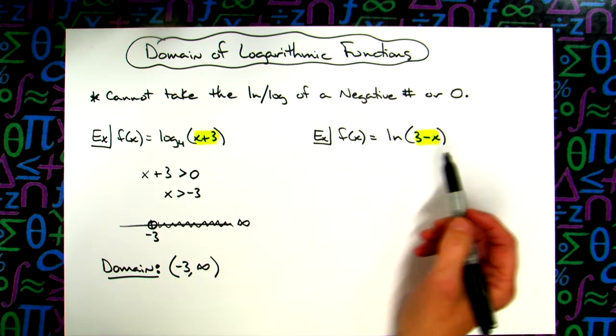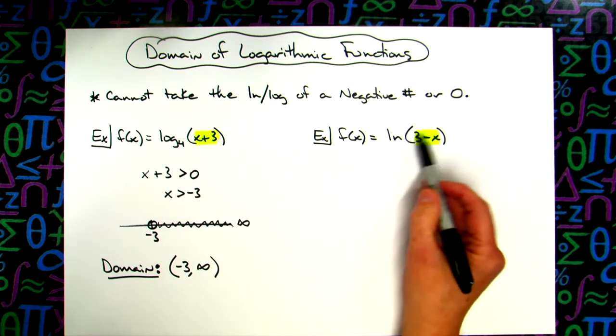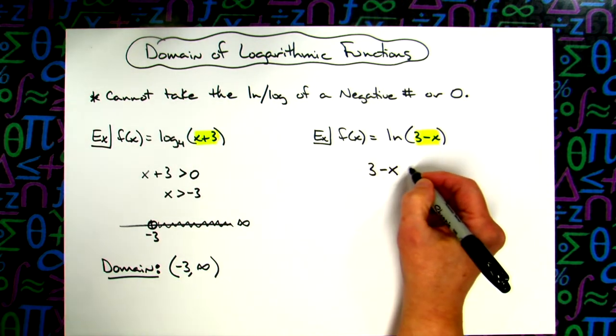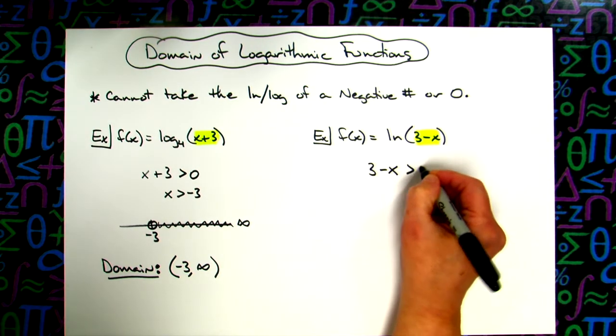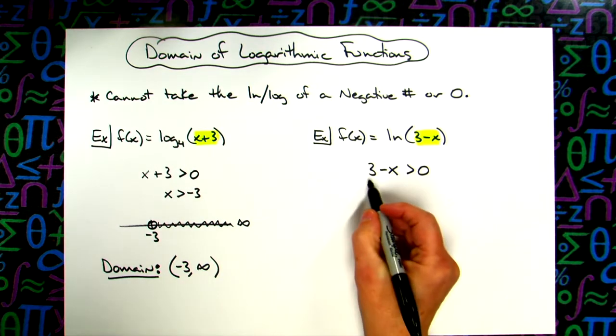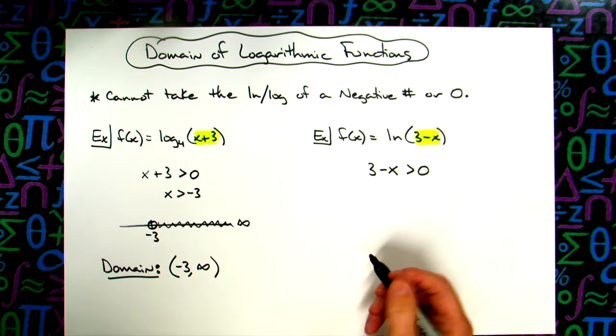It doesn't matter that it's a natural log versus a LOG. I'm going to take that inside part, so 3 minus x, and say, okay, I know it has to be positive. It has to be greater than zero. It cannot equal zero. It cannot be negative. So I'm going to solve this and then see what happens. So I'm going to subtract 3 from both sides of the equation.